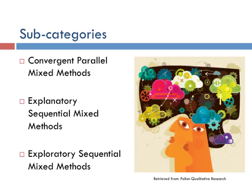Explanatory sequential mixed method is when the researcher first gathers quantitative research, analyzes it, and then builds on the results with qualitative research.